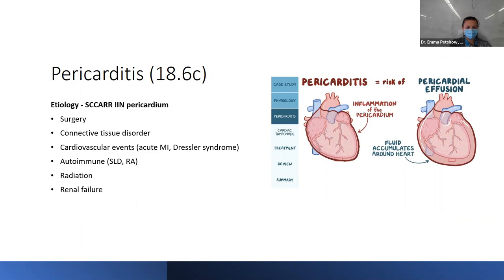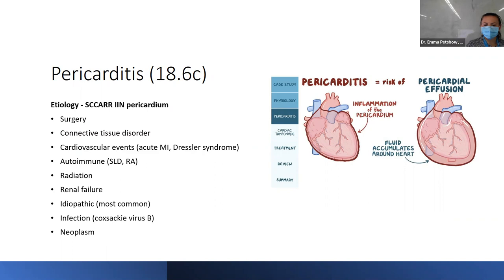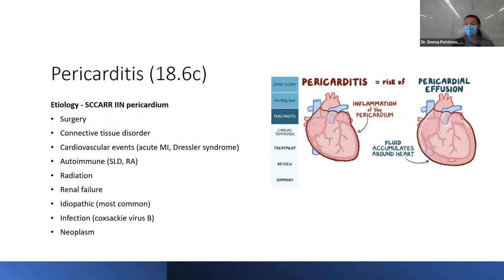For etiologies, the mnemonic is 'SCAR IN PERICARDIUM': Surgery, Connective tissue disorder, cArdiovascular event, autoimmune, Radiation, Renal failure, Idiopathic (most common), Coxsackievirus, and Neoplasm. The key ones to remember are post-surgery, cardiovascular events, idiopathic being most common, and Coxsackievirus. The big risk or complication is pericardial effusion.